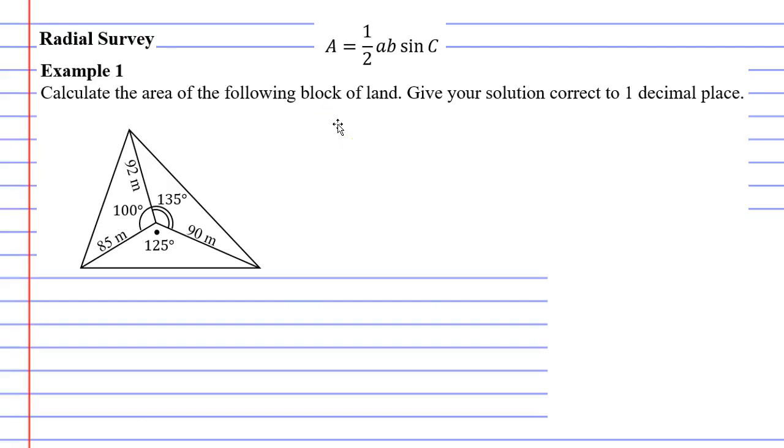In this video we're going to complete example 1. This is what's known as a radial survey. What happens is a surveyor comes out and takes measurements on a block of land and then uses these measurements to calculate the area of the block of land. In this example we're going to calculate the area correct to one decimal place.